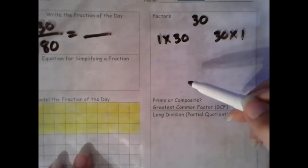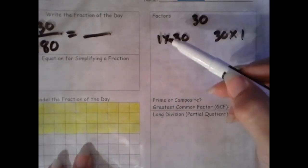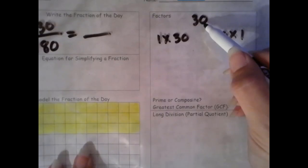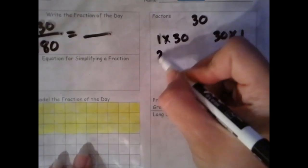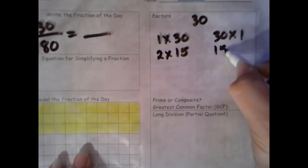Now we're going to go through our divisibility rules in an orderly fashion so we don't miss any factors. In order after 1 is 2. The rule for 2 is that it ends in an even number. 0 at the end is an even number. So 2 is a factor. 2 times 15, 15 times 2.